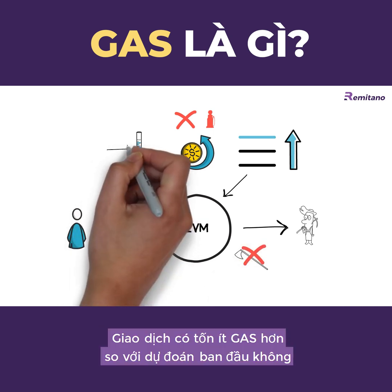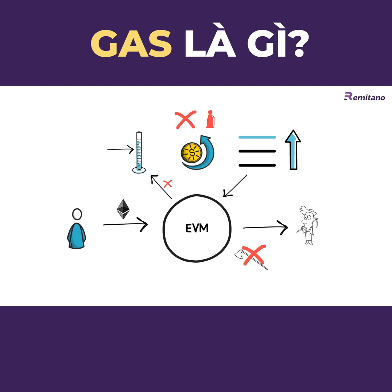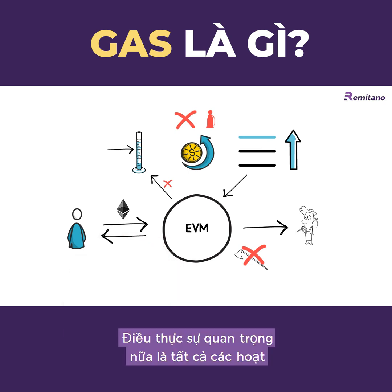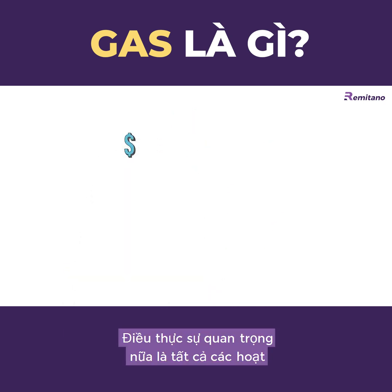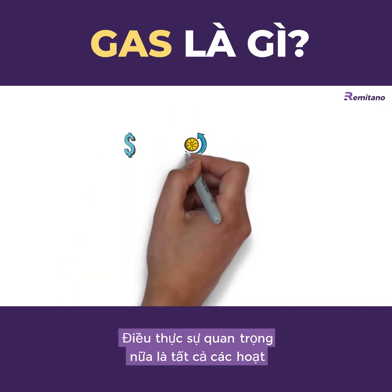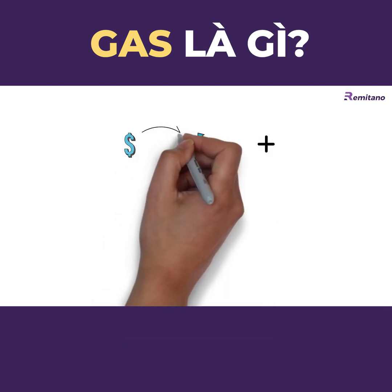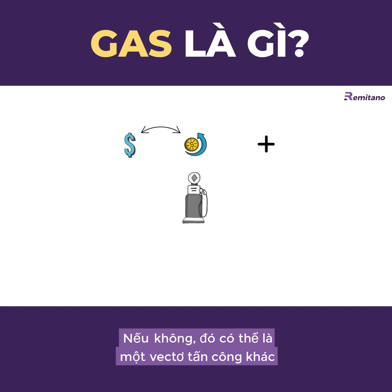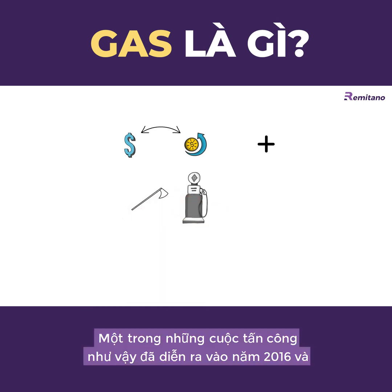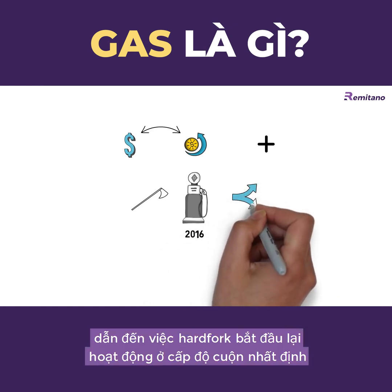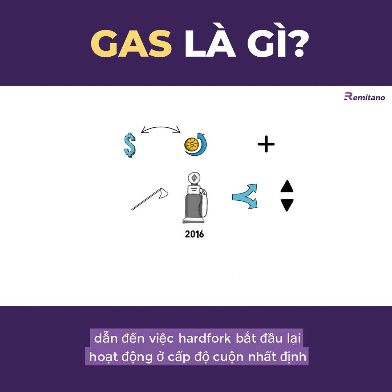If the transaction consumes less gas than initially anticipated, the remaining gas is converted to ETH and refunded to the sender. It's also really important that all operations on Ethereum have the correct gas cost relative to each other — otherwise that could be another attack vector. One such attack took place in 2016 and resulted in a hard fork that repriced certain low-level operations.